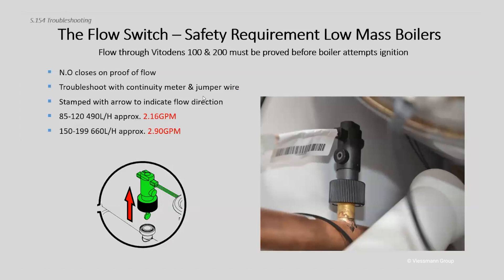The flow switch is essentially just a switch — a normally open switch that closes when we get the pump at the right flow rate. It's important to note there is a minimum flow rate on all flow switches — they don't know what your flow is except for that one position when we meet or exceed the minimum. The smaller boilers — the 120 and 85 — have a 2.16 gallon-per-minute flow switch regardless of model. You need at least 2.16 GPM before that flow switch will close. The bigger boilers need about 2.9 gallons per minute before the flow switch will close.